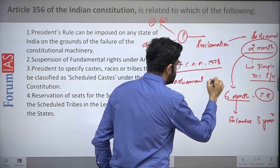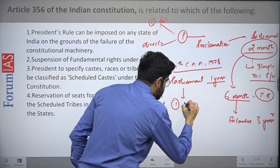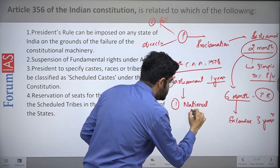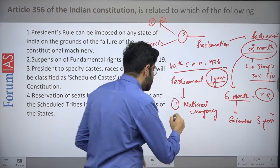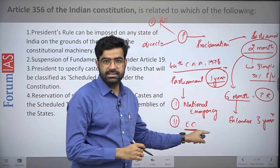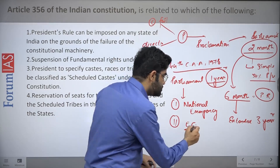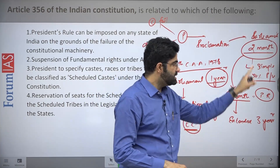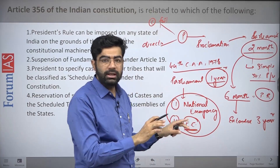Parliament's maximum approval is for one year — meaning two six-month rolling approvals. After one year, to extend further, two conditions must be met: first, a national emergency must be in operation in the country or part of it; second, the Election Commission must certify that elections are not possible in that state. These two conditions must be met to extend beyond one year up to a maximum of three years.